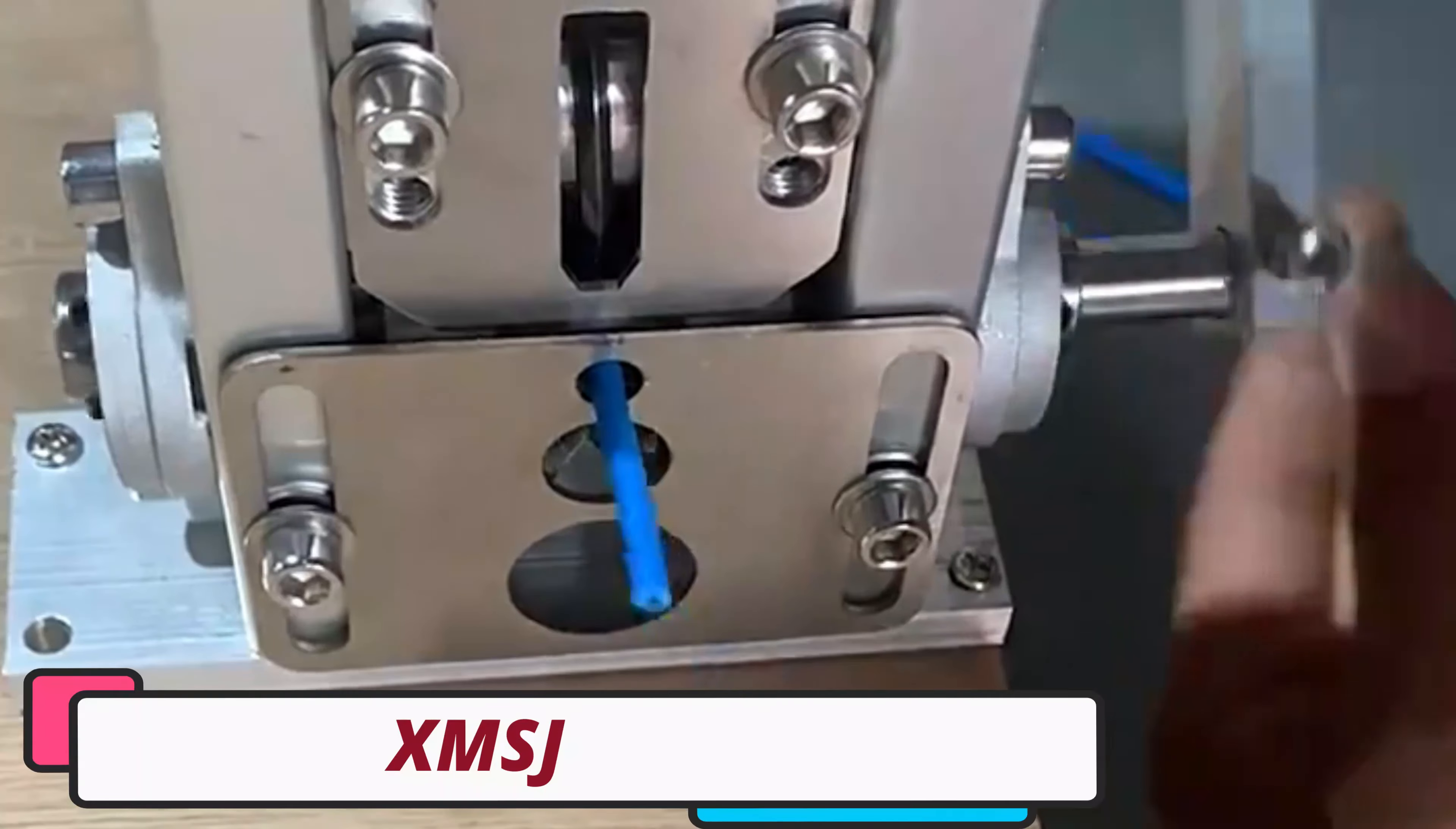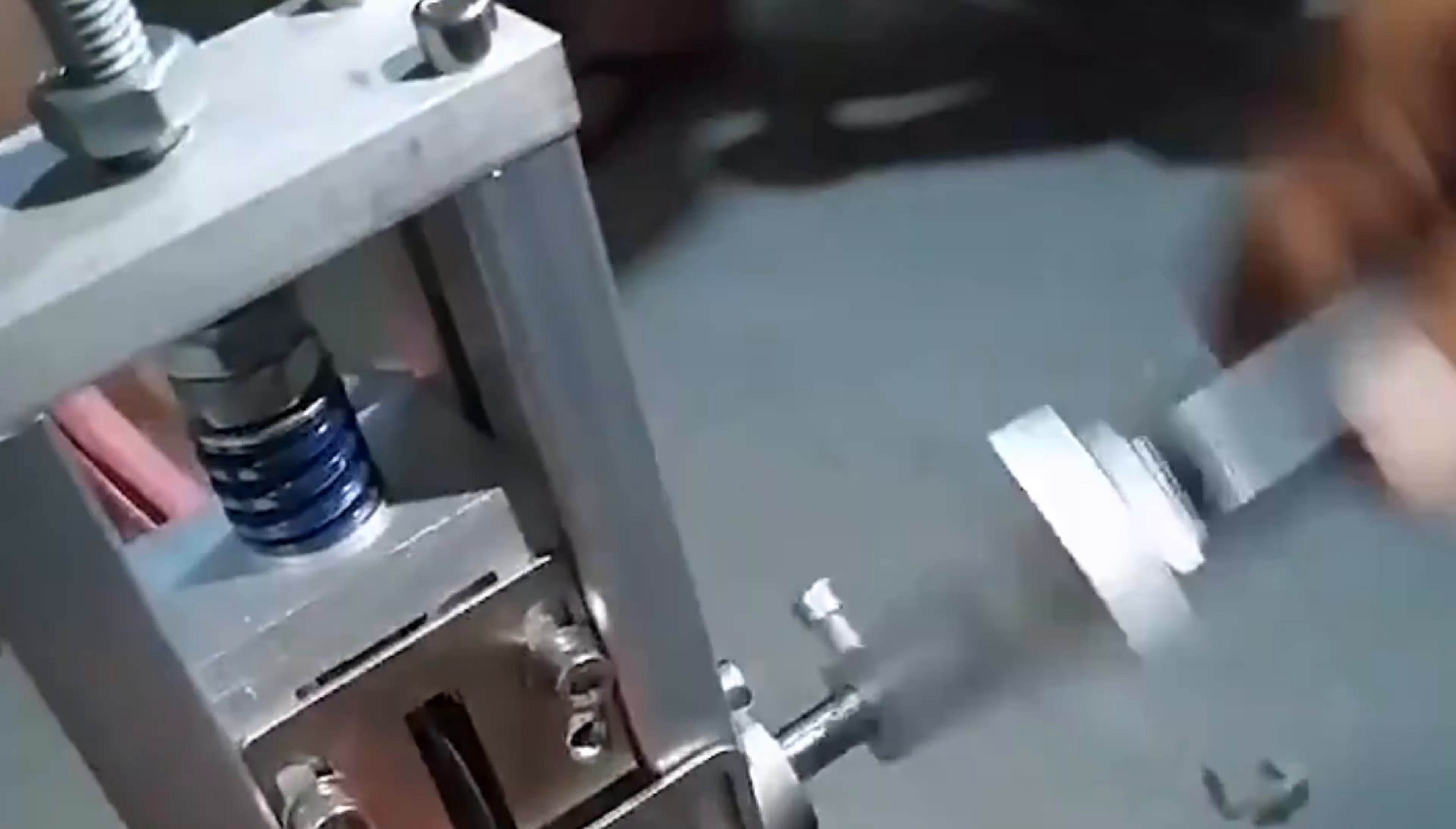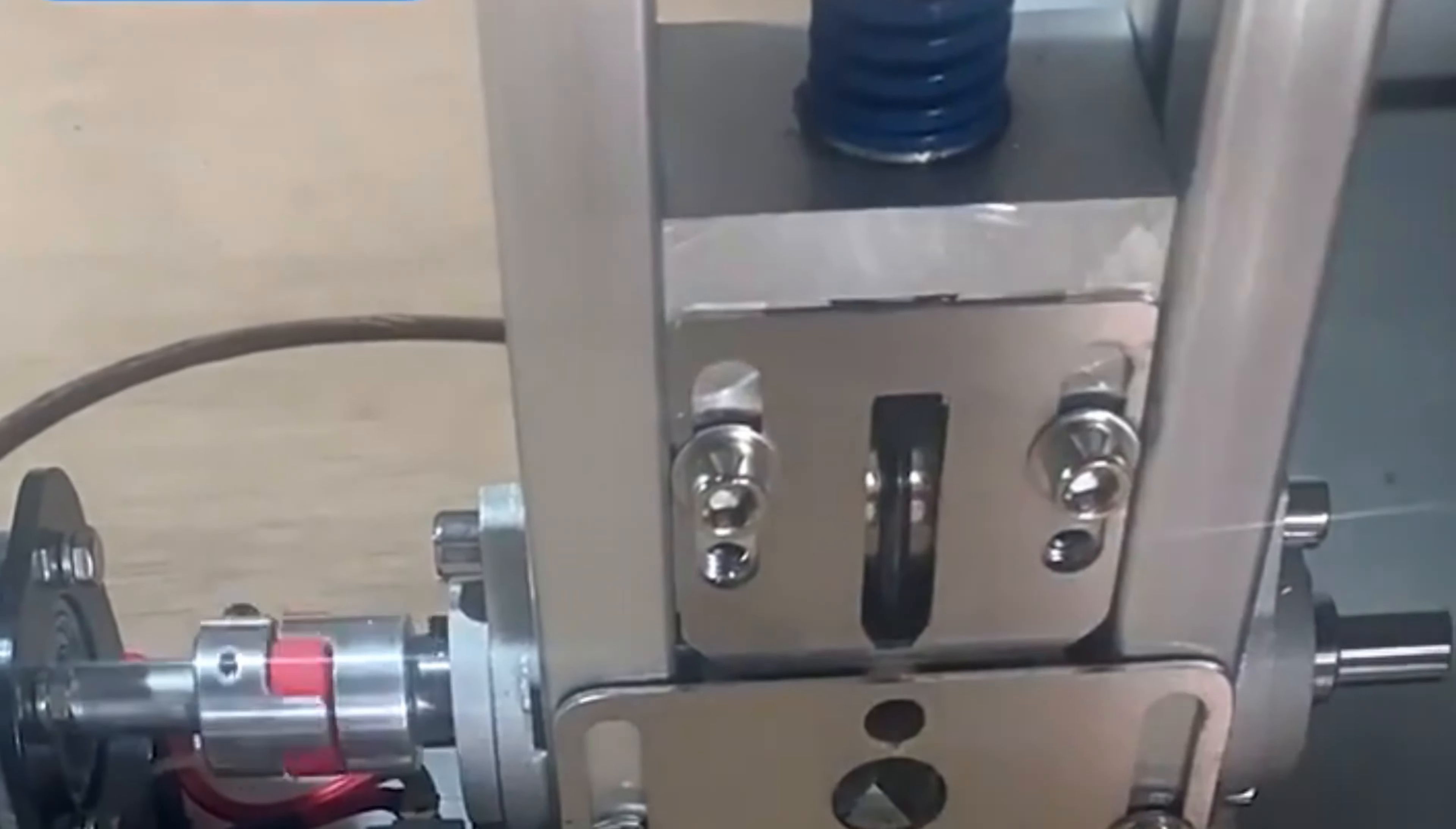Number 2: XMSJ SDBXJ Wire Stripping Machine. The XMSJ SDBXJ Wire Stripping Machine is a top-notch electronic tool designed to simplify wire stripping tasks. It offers versatility for various electronic applications, making it suitable for professionals and DIY enthusiasts.